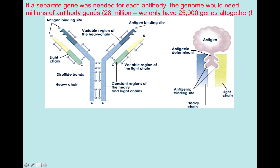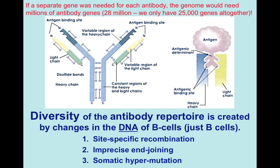If a separate gene was needed for each antibody, the whole genome would need millions of antibody genes — 28 million. But we only have 25,000 genes altogether. So clearly there has to be some other mechanism for generating the diversity we need to fight all the different types of agents that infect us. The diversity of the antibody repertoire is created by changes in the DNA of B cells — just the B cells; no other cells get their DNA rearranged. There's site-specific recombination, imprecise end joining, and somatic hypermutation. All three of these mechanisms contribute to the diversity of the antibody repertoire.